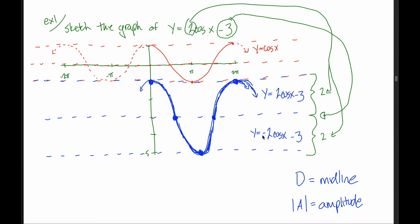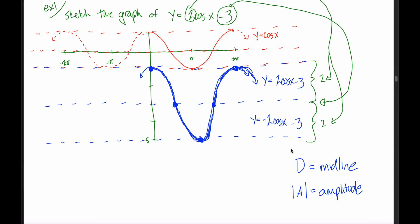What would y equals negative 2 times cosine of x minus 3 look like? D equals negative 3, so the midline is still at negative 3. A is negative 2, but the absolute value of negative 2 is positive 2, so the amplitude is 2. The dashed lines are 2 above and 2 below the midline — the same boundary lines as before. But wait, isn't this graph the same?